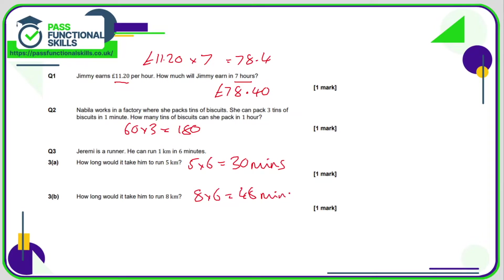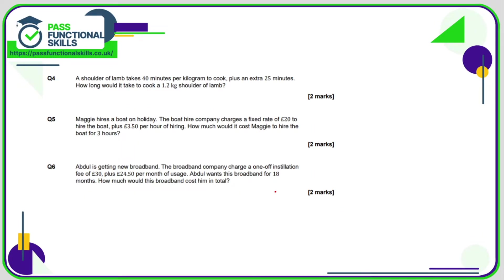Question number four: a shoulder of lamb takes 40 minutes per kilo and an extra 25 minutes added on top. So for 1.2 kilos of lamb, it's going to be 1.2 multiplied by 40 and then add the 25 on top of that. 1.2 times 40 is 48, 48 plus 25 is 73 minutes.